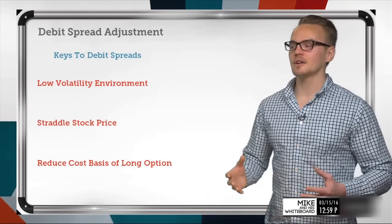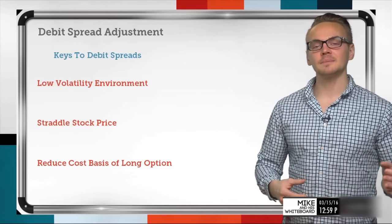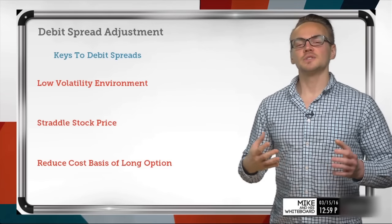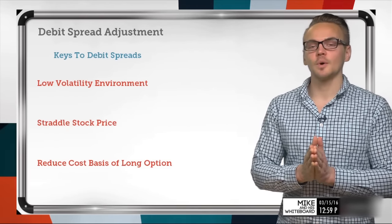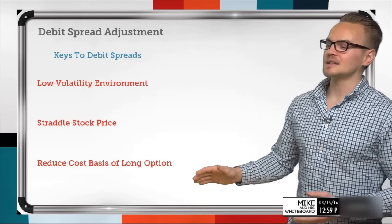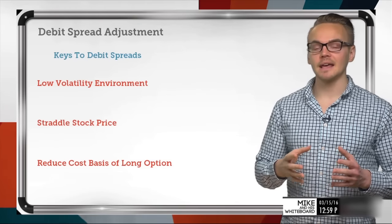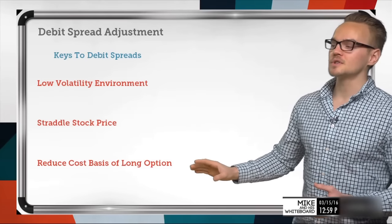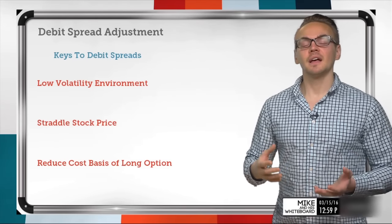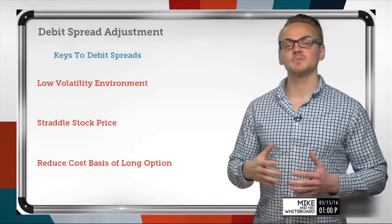The second key is to straddle the stock price. We normally buy an in-the-money option and sell an equidistant, or maybe a little closer, out-of-the-money option to give ourselves a break-even right around the stock price or just a little bit better. The biggest key with debit spreads is to understand what we're doing: instead of buying a naked option with infinite upside, we're focused on reducing the cost basis of our long option. That's what gives us the highest probability of success and caps our upside, but we're all about high probability and reducing max loss.